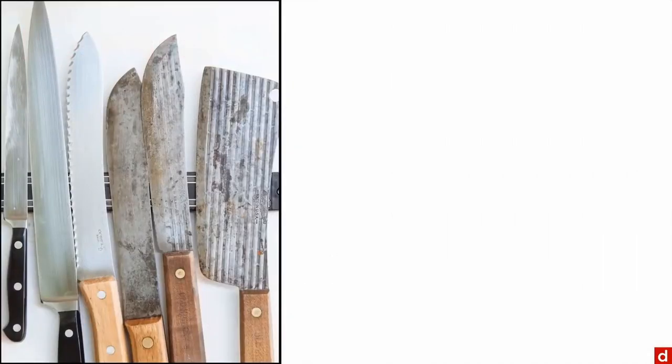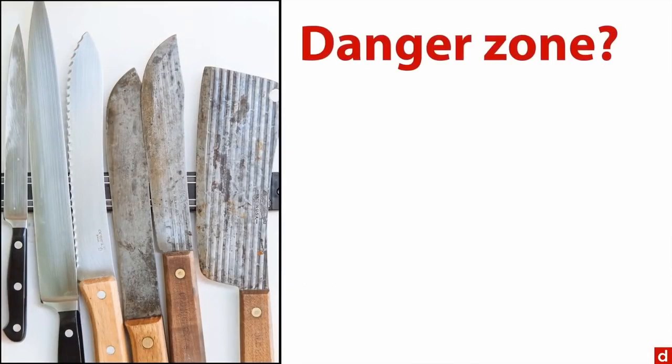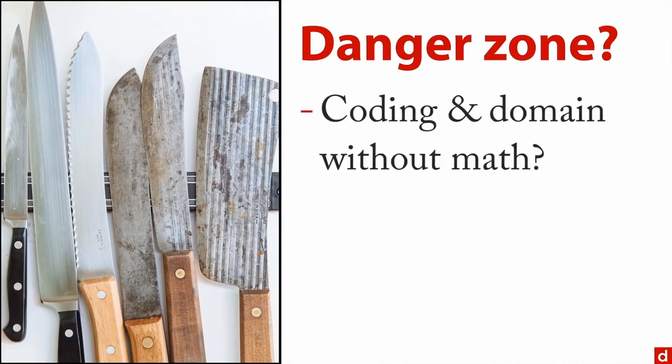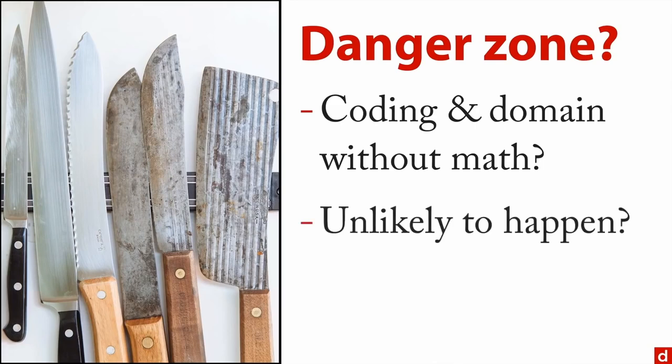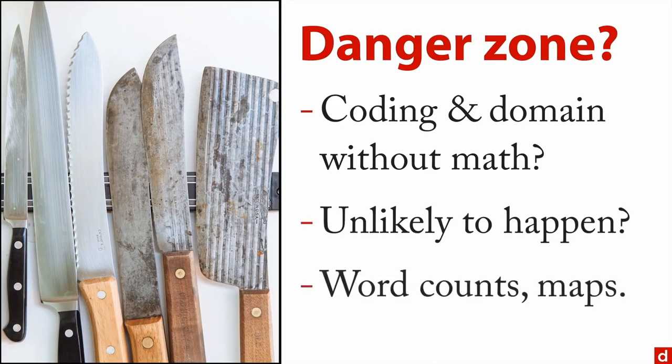Finally, there's what Conway called the danger zone: the intersection of coding and domain knowledge but without math or statistics. He says it's unlikely to happen, and that's probably true. But examples include word counts — taking a large document and counting how often each word appears — and drawing maps showing how things change across place and time. You don't necessarily need the math, but it can be very insightful.